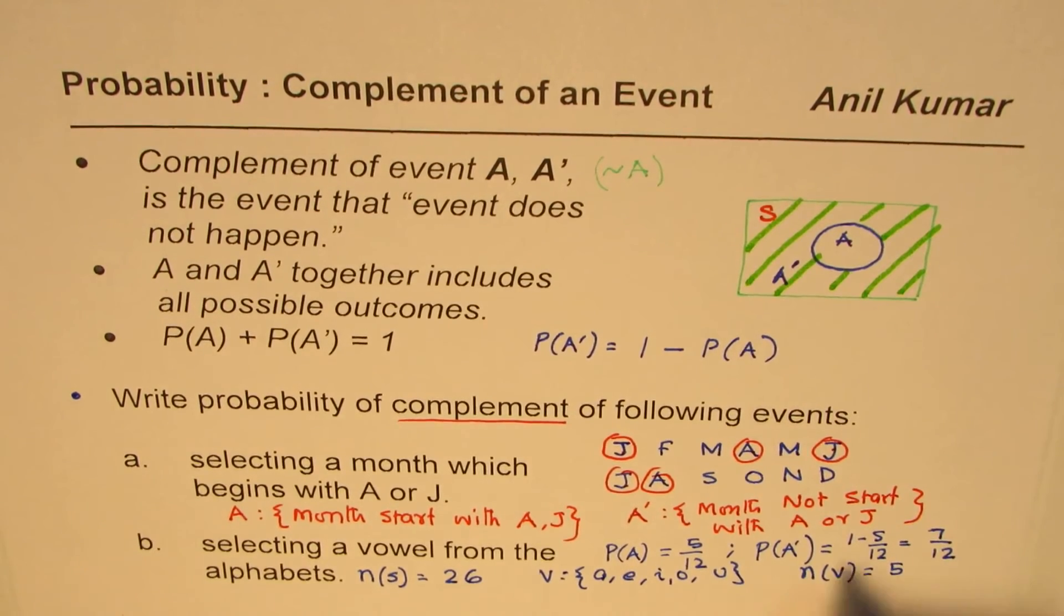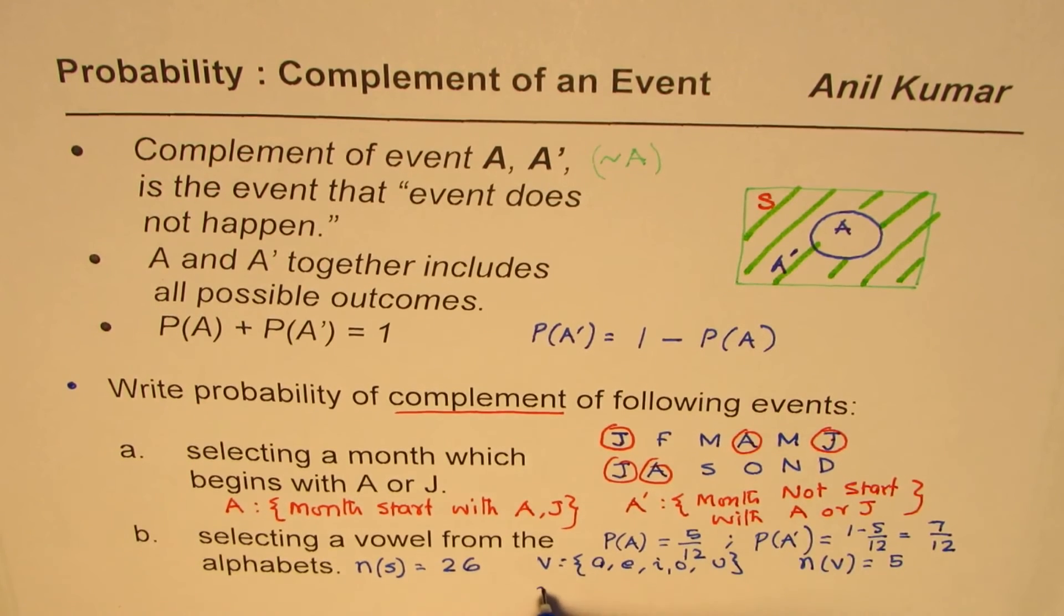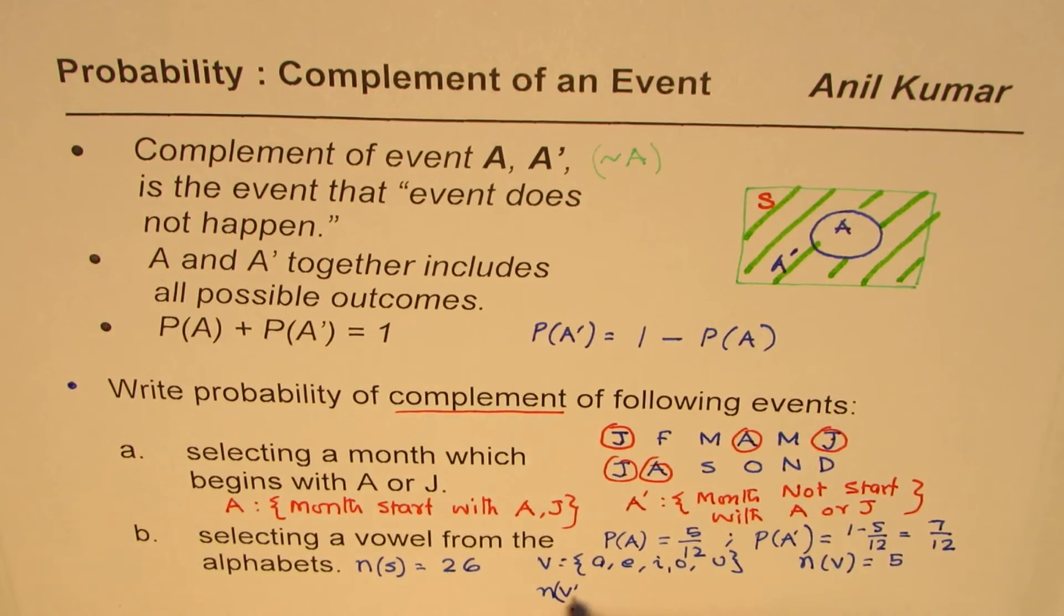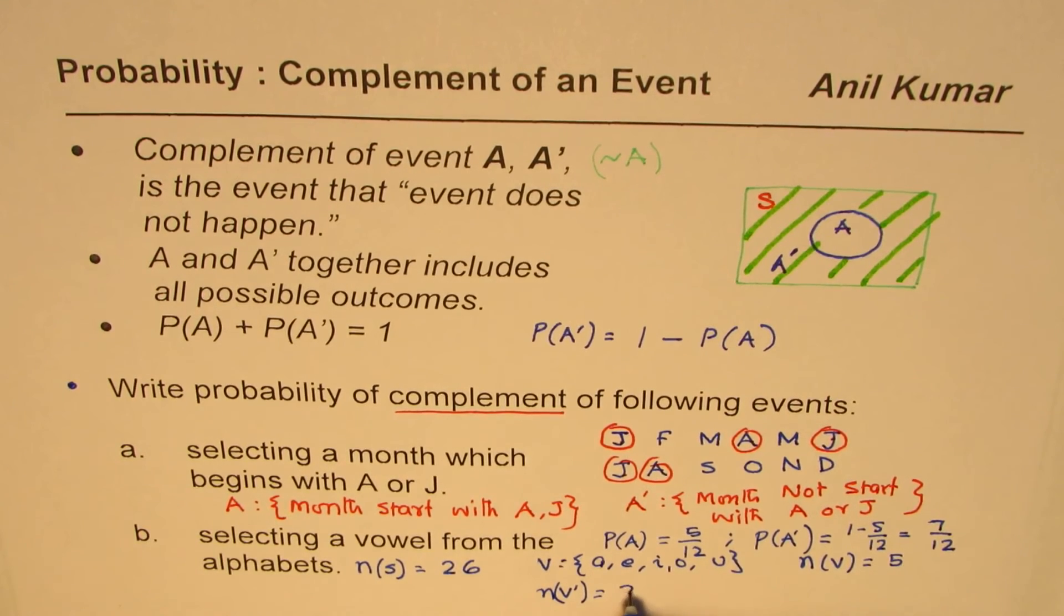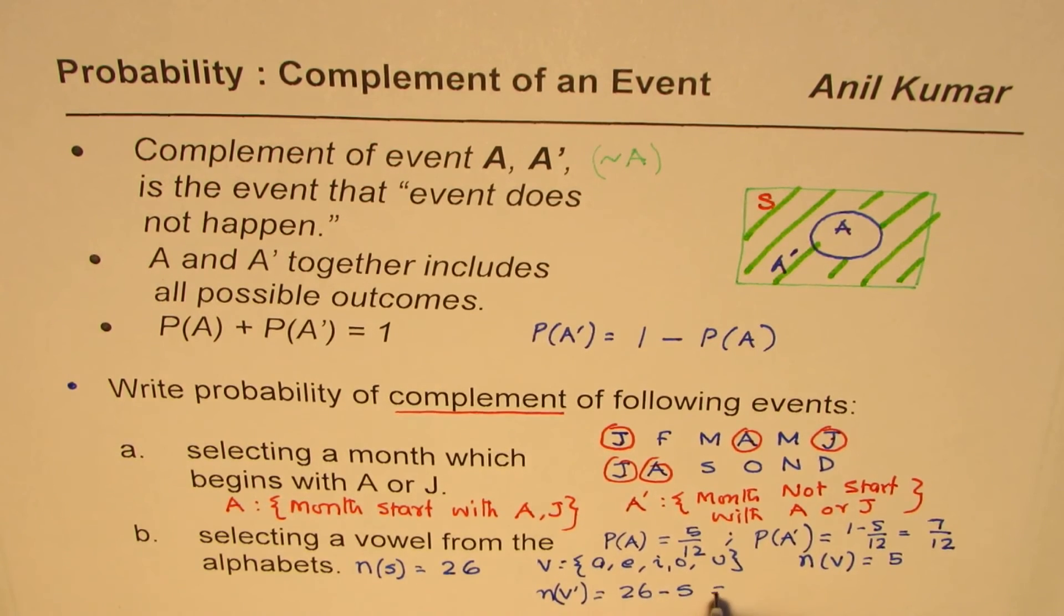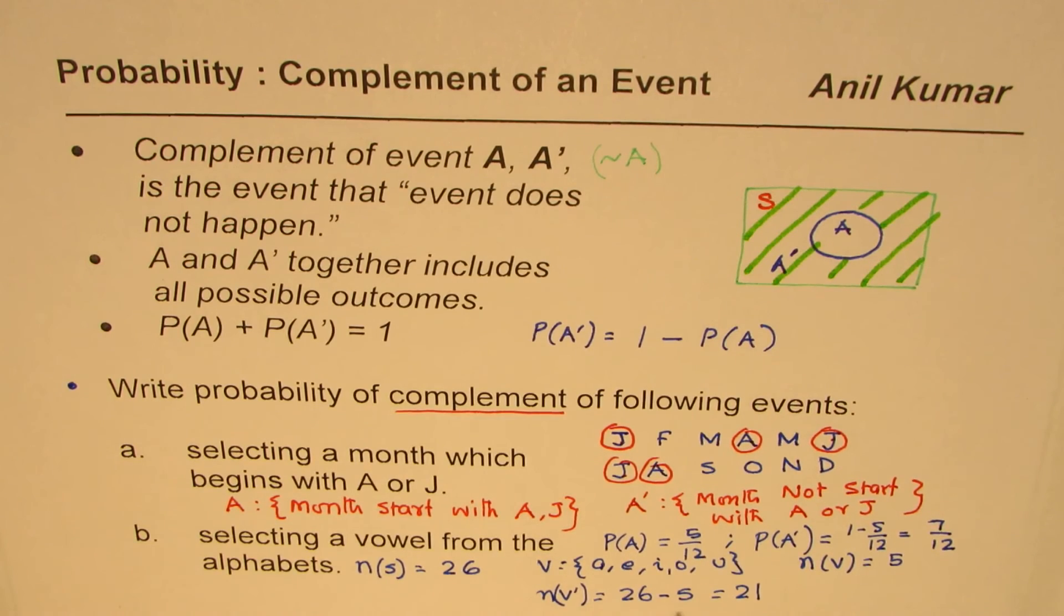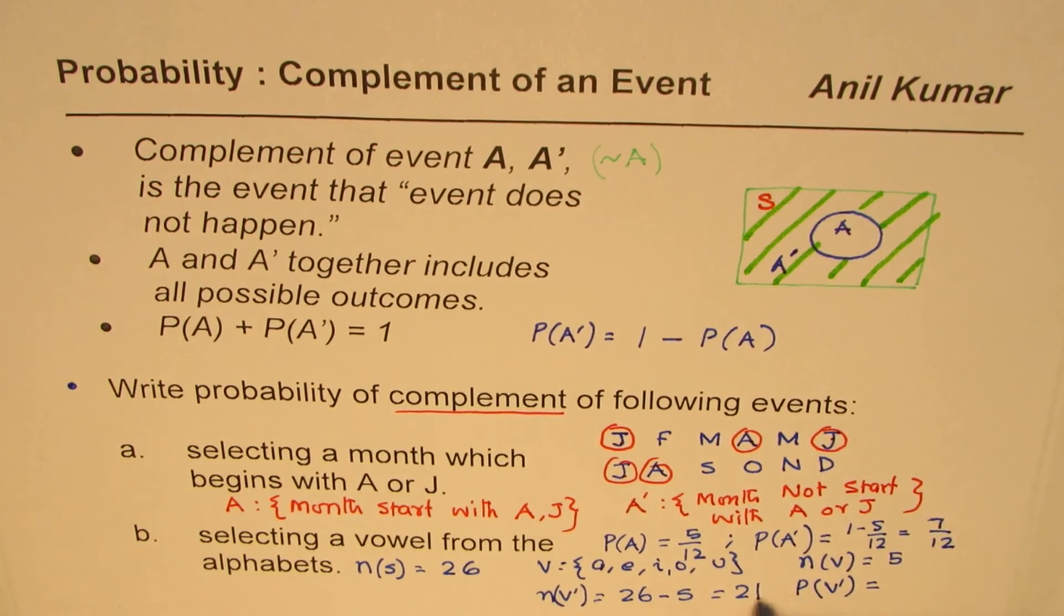So what is the complement of this? 26 minus 5. So we want to find number complement of vowels which will be 26. We need to find the complement of vowels which are consonants as you know, will be 26 minus 5 or 21. So we can directly find the probability of the complement by writing probability of not vowels is 21 over total number of letters which is 26.